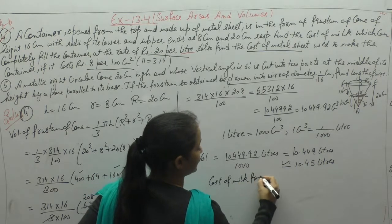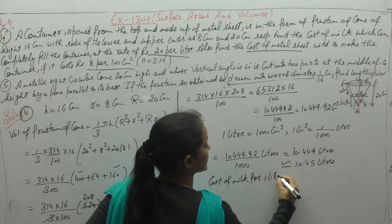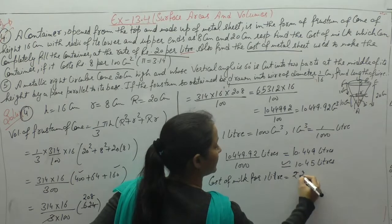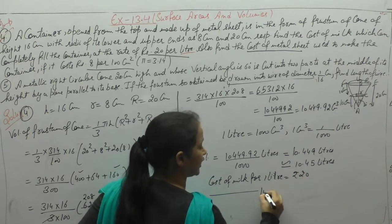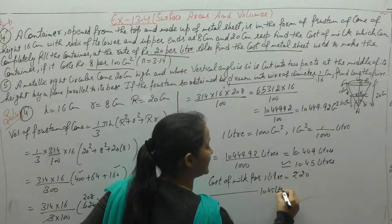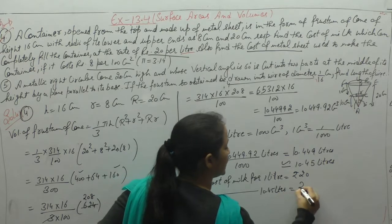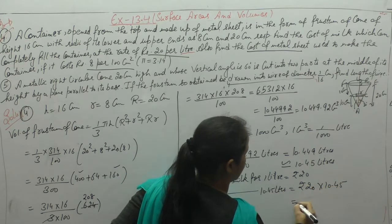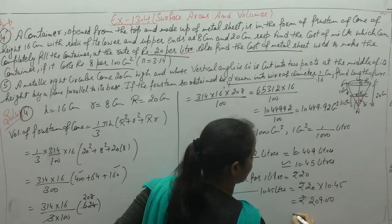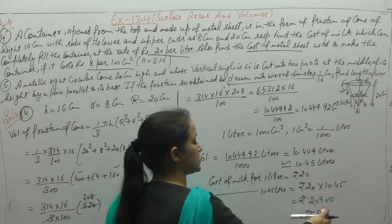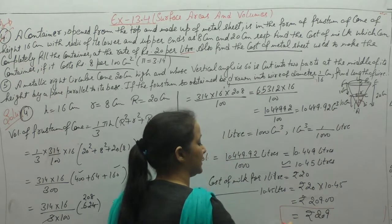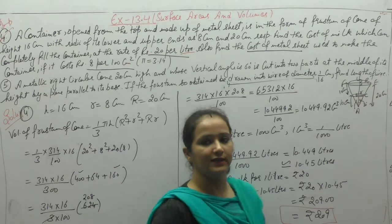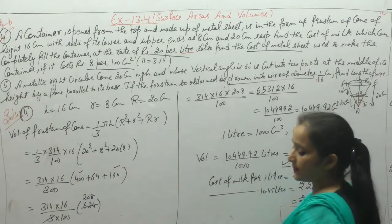Now calculating cost. Cost of milk for 1 liter is ₹20. So cost of milk for 10.45 liters is ₹20 × 10.45 = ₹209. That is the cost for 10.45 liters of milk.